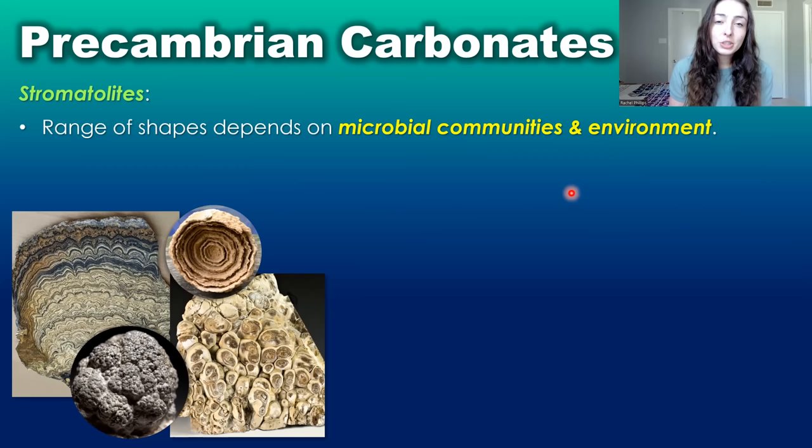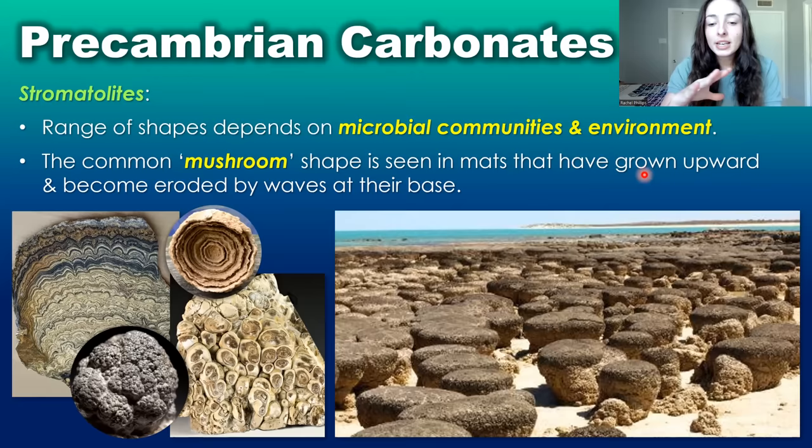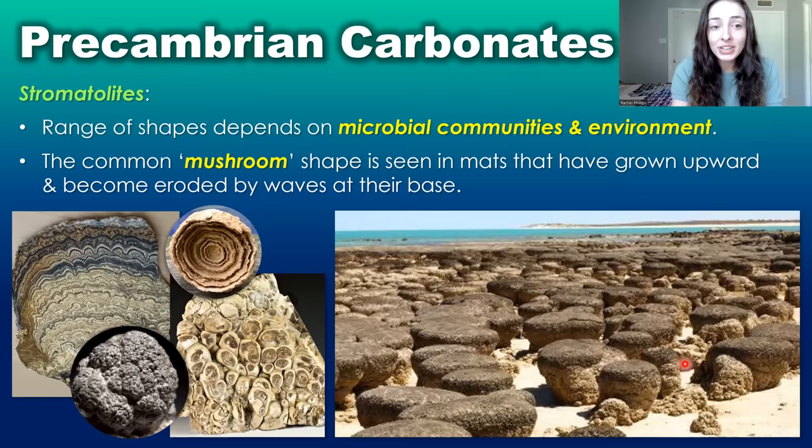Stromatolites in the Precambrian came in a range of shapes depending on the microbial communities in the mat as well as the environment. The most commonly known mushroom-like shape is seen in mats that grew upward in environments where waves erode their base. On modern earth, stromatolites are way less diverse and abundant because many other organisms now occupy the environments they used to live in. In the Precambrian they pretty much had the world to themselves, so they were far more diverse and abundant back then.